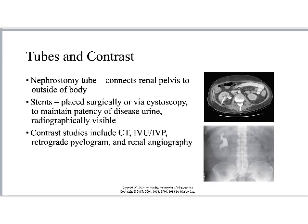The contrast studies we do to visualize the kidneys include CT, CT uroscopy or CT urograms, IVUs or IVPs — which are basically the same thing, meaning intravenous urogram or intravenous pyelogram, with pyelogram being the older term. There's also retrograde pyelogram, which means running things backwards up through the ureter to visualize the kidneys, or renal angiography to evaluate arterial flow to the kidneys, which can be done via CT or interventional. That last slide shows contrast draining out of the kidneys into the major calyces.